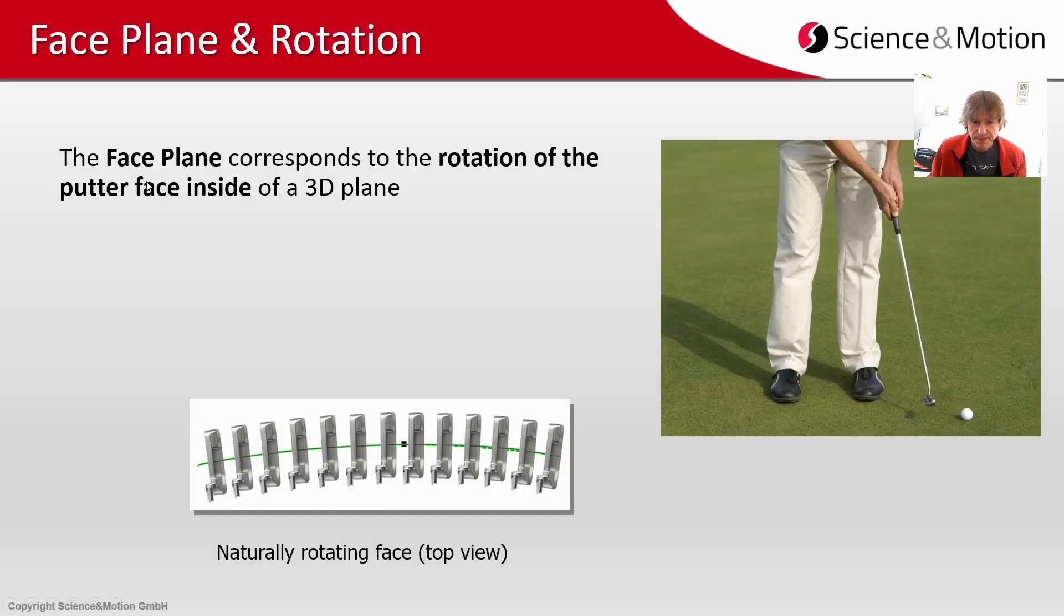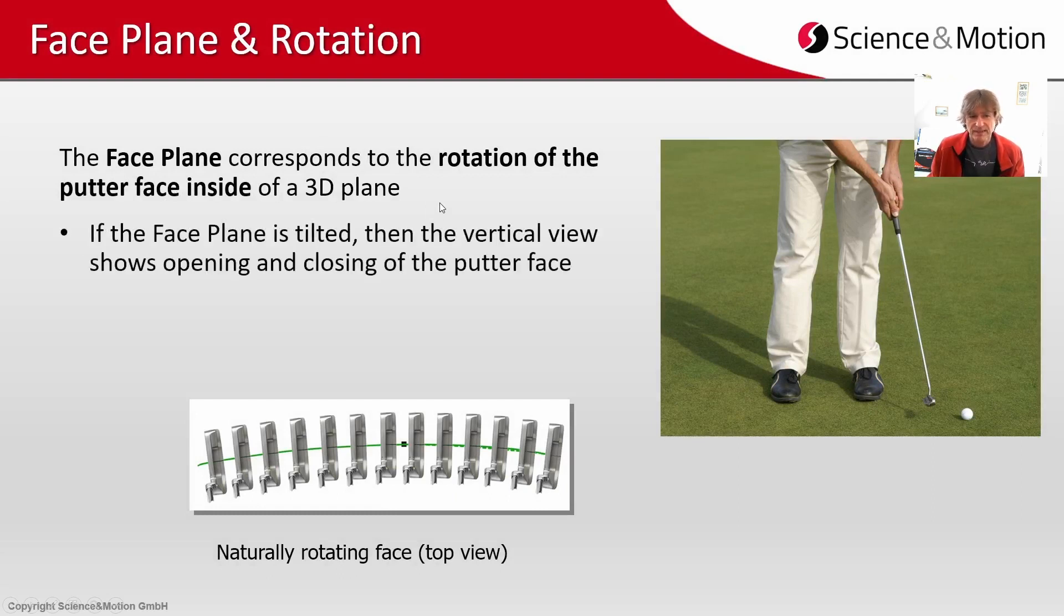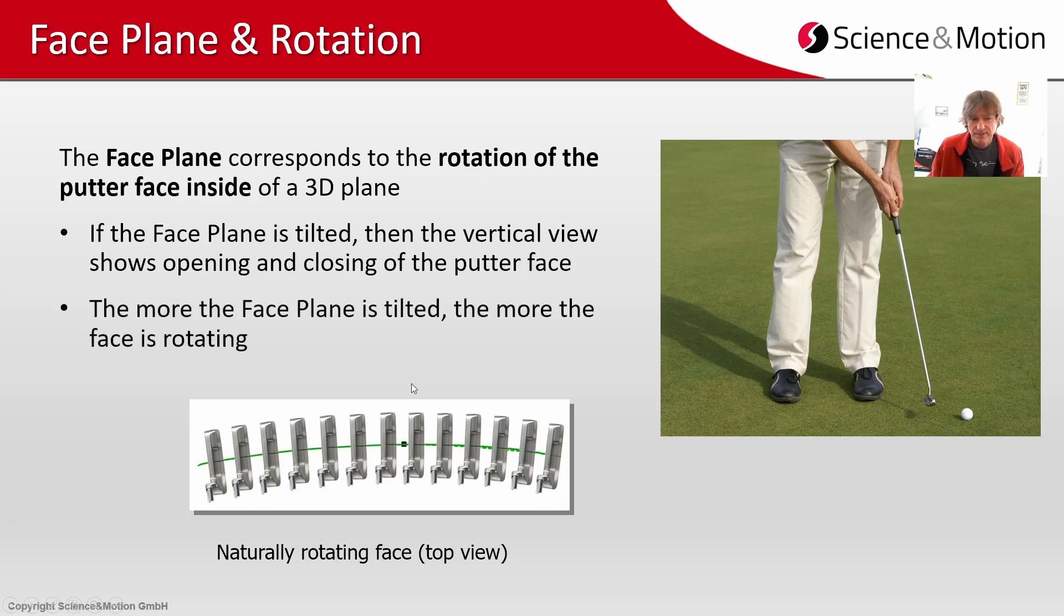Per definition the face plane corresponds to the rotation of the putter face inside of a 3D plane. If this face plane is tilted then a vertical view will show opening and closing of the putter face against the target line which is absolute rotation. The more the face plane is tilted the more the face will rotate against the target line.